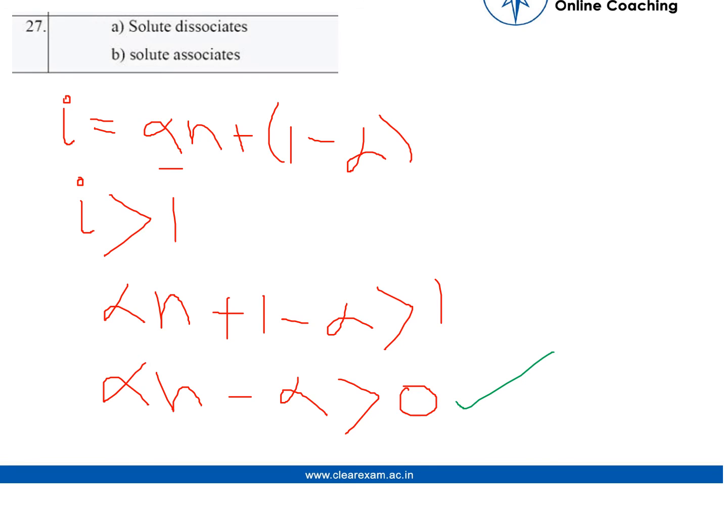Now coming to the next part, if i is less than 1, that means the whole equation alpha n plus 1 minus alpha is also less than 1. So alpha n minus alpha is less than 0. That means that this degree will not dissociate but because it is negative, it will associate. So our solute associates in this one.